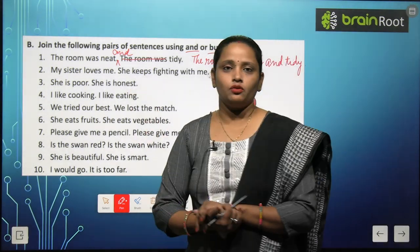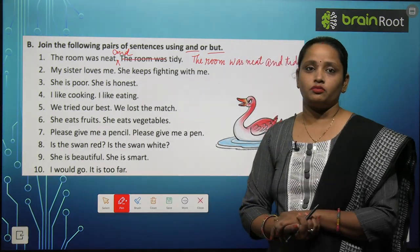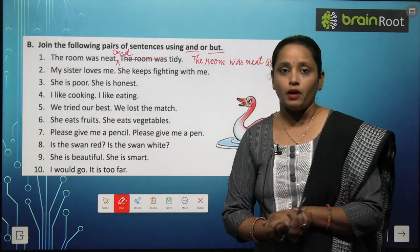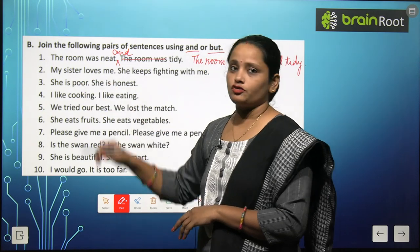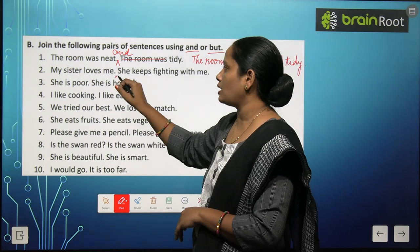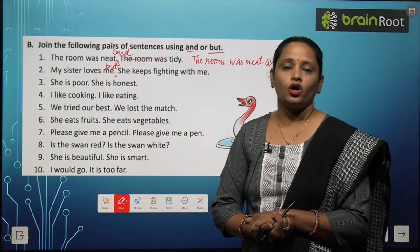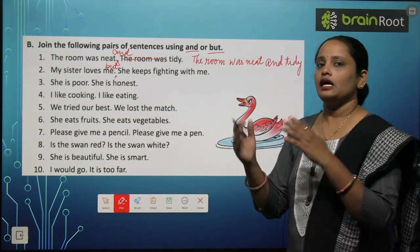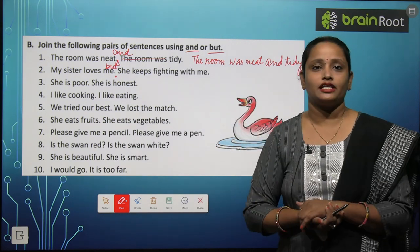Second pair: 'My sister loves me. She keeps fighting with me.' वो love भी करती है, fight भी करती है — opposite ideas हैं, तो हम 'but' use करेंगे। Sentence: 'My sister loves me, but she keeps fighting with me.' यहाँ पे 'but' लगाएंगे और बाकी sentence same to same लिख देंगे।